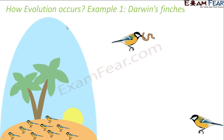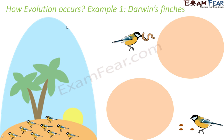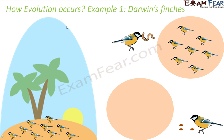Gradually, finches with longer beaks and those with shorter beaks were divided into two categories. The shorter-beaked ones fed only on regular seeds, while the longer-beaked ones fed on worms and hard seeds. This reduced competition. Since the longer beak was an advantage for survival, the population of longer-beaked finches increased as they reproduced more successfully.